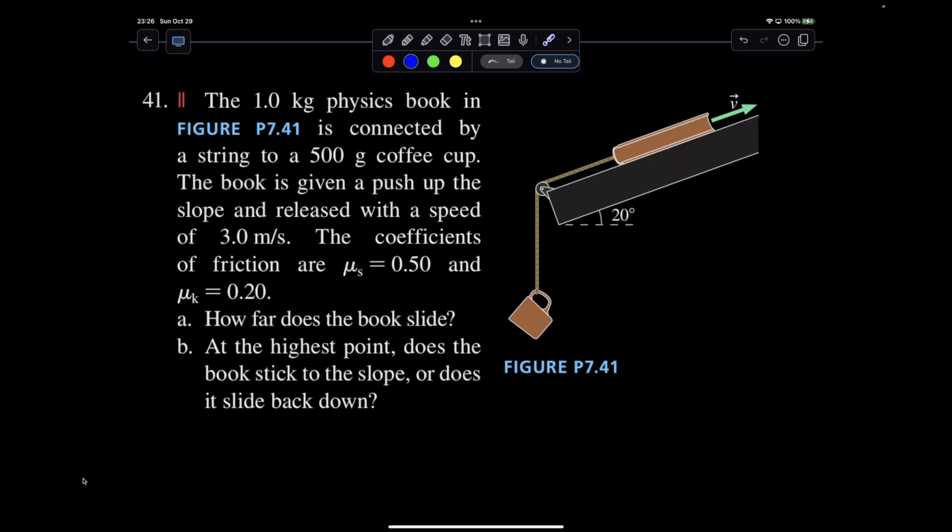We're going to be looking at coefficient of kinetic friction because it's sliding. Initial velocity. And there is a cup attached to it. We need to figure out first how high up the incline the book will slide, and then whether at the highest point it will stick to the slope or slide back down.